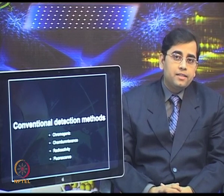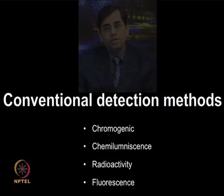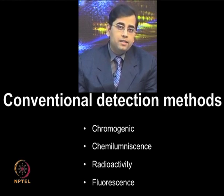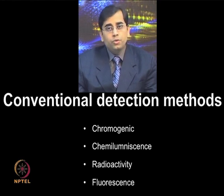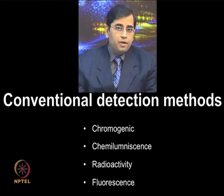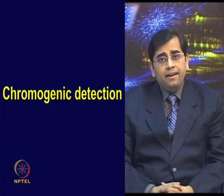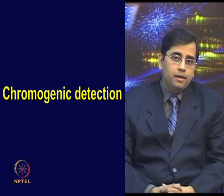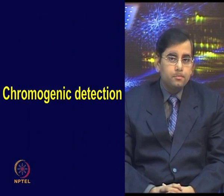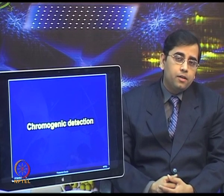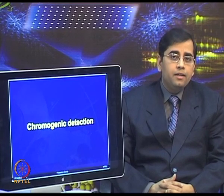Let us start discussing conventional detection techniques for label-based detection systems. The most conventional ones available are chromogenic, chemiluminescence, radioactivity, and fluorescence-based detection systems. We will discuss each one in more detail and then move on to the more recently emerged advanced platforms used for label-based detection. Chromogenic detection: the antigen-antibody interactions can easily be detected by use of chromogenic reactions. A chromogenic substrate is a molecule which is catalyzed by the enzyme linked to the antibody to provide a colored product which can be easily detected.